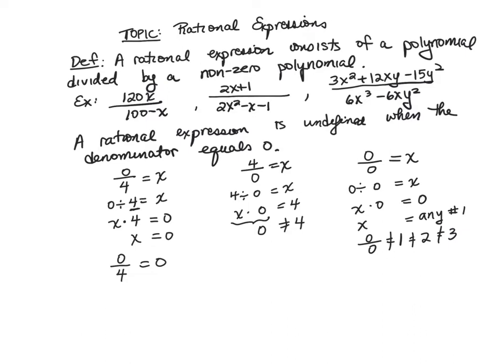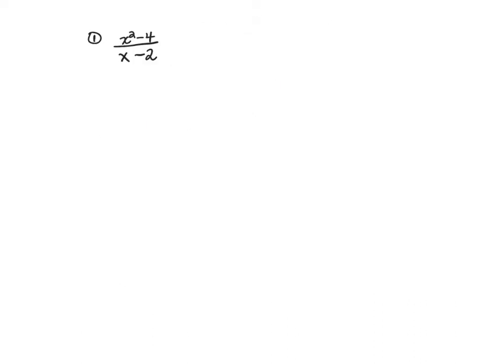Now that we've discussed this, let's take a look at this rational expression: x squared minus four over x minus two. It is understood that x can be any number except when the denominator is zero. So x minus two cannot equal zero, which means x is not equal to two. That is implied when we write the rational expression that way.